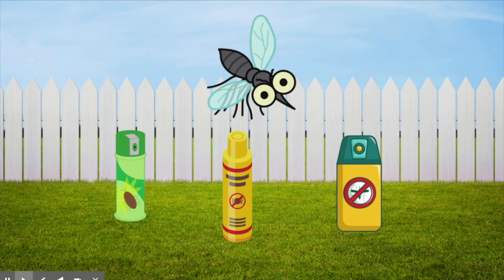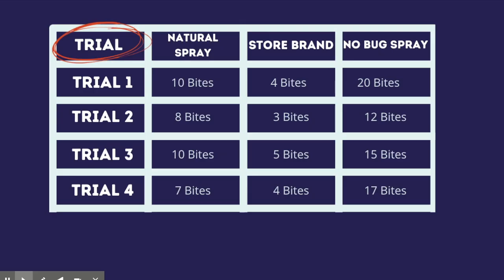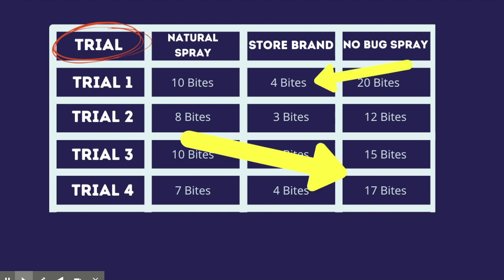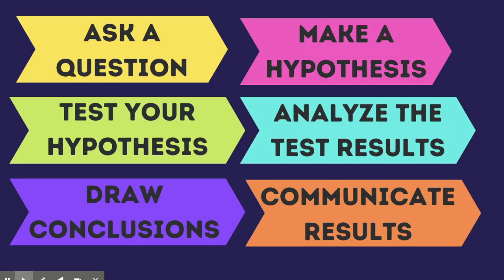One last thing: in order to further ensure we're getting the most reliable results possible, I would need to test out each type of bug spray more than one time. As time consuming and uncomfortable as this would be, it would help the experiment because I would have more data on each type of bug spray, and I could even calculate the average number of bug bites I got with each different spray. We call multiple tests of the same thing trials. Performing multiple trials gives scientists one more way to make sure the results they get are reliable and accurate. Once the entire experiment is complete and all the data has been collected, we would follow the rest of the scientific method: analyzing data, drawing conclusions, and sharing our results.